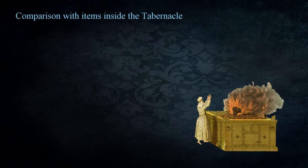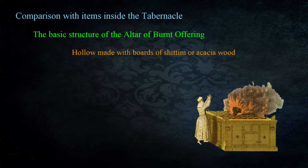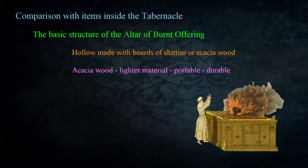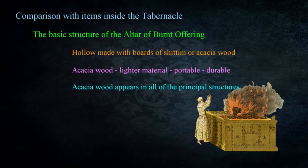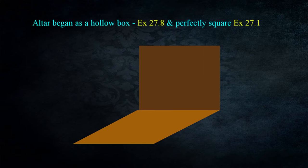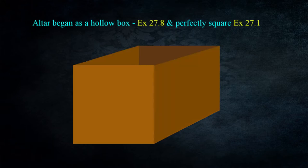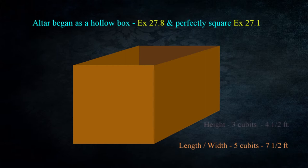From this description we can note similarities and differences between the altar and items inside the tabernacle. The altar was to be hollow with boards of shittim, or acacia, wood — a lighter material known for its portability and durability that appears in the principal structures created for worship. The altar began as a perfectly square box: the length and width were to be 5 cubits — approximately 7½ feet — and the height was 3 cubits, or approximately 4½ feet, placing it at about waist level for an average person.